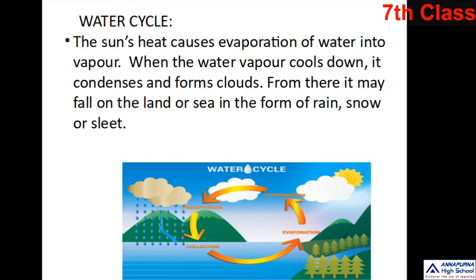The water may then fall on the earth in the form of rain, snow or sleet — these are called precipitation. Once the clouds reach the saturation point, the water comes down in the form of precipitation. Different forms of precipitation include rain, snow, dew, and sleet. Rate of evaporation depends upon the sun's heat and the absorption capacity of the air.